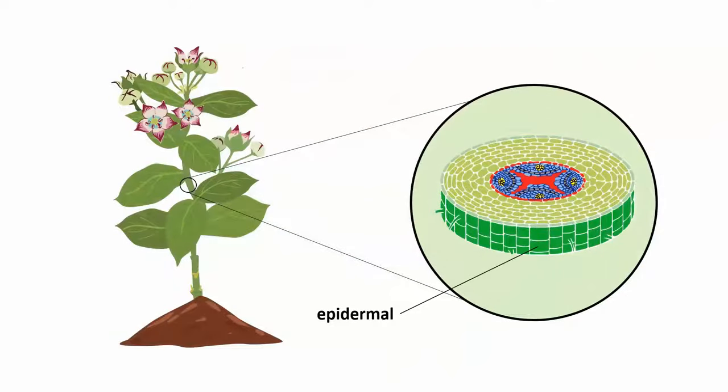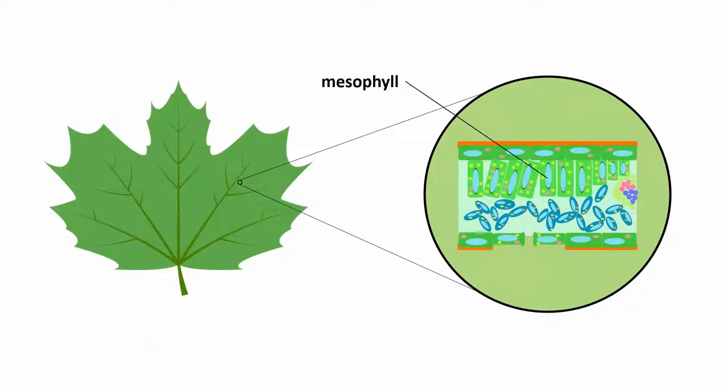Epidermal tissues form the outer layer or the skin of plants. Ground tissues store food. Vascular tissues transport water and food to and from different parts of the plant. Mesophyll tissues make food in the presence of sunlight.